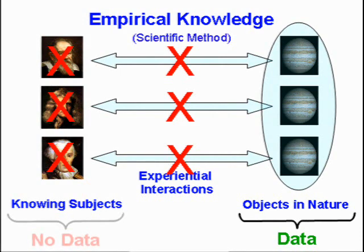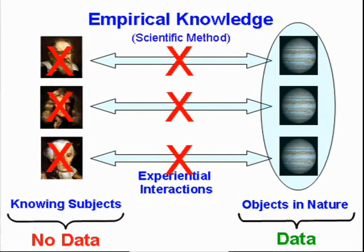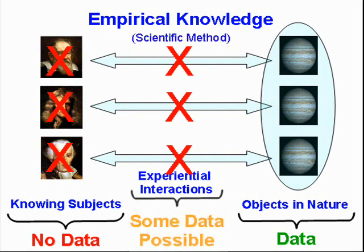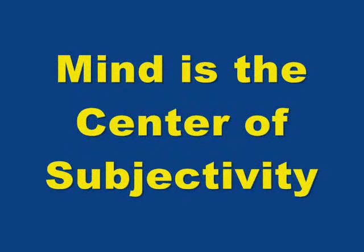However, when we turn to the mind, which is the core of human subjectivity, we have no data, because our method has been specifically designed to filter out subjective data. Because the scientific method has been designed to be objective — which is a good thing in dealing with the objects of nature — it filters out data on subjectivity, which is the very thing that we are trying to study when we are considering the mind. That is why consciousness is a hard problem for the current scientific method.